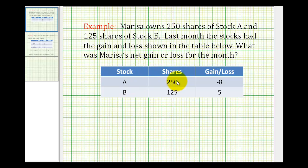So she has 250 shares of stock A and for the month each share lost eight dollars, represented by this negative eight. And then she has 125 shares of stock B which had a gain of five dollars per share shown by this positive five. So it's important to recognize that this loss and gain is per share.